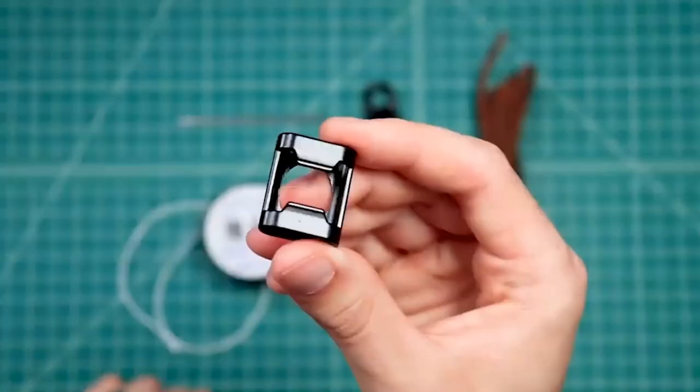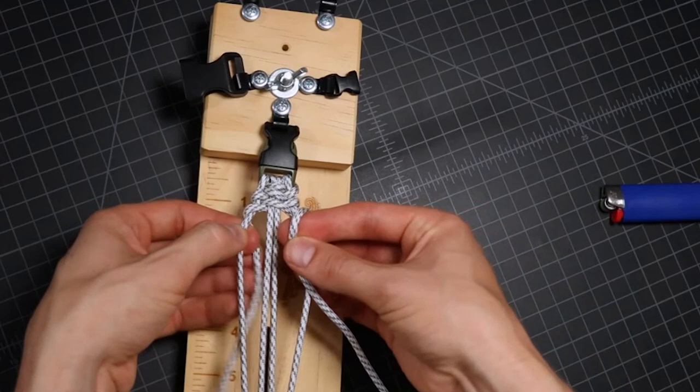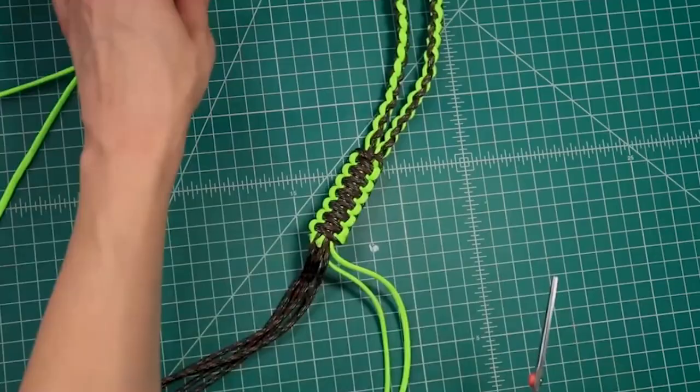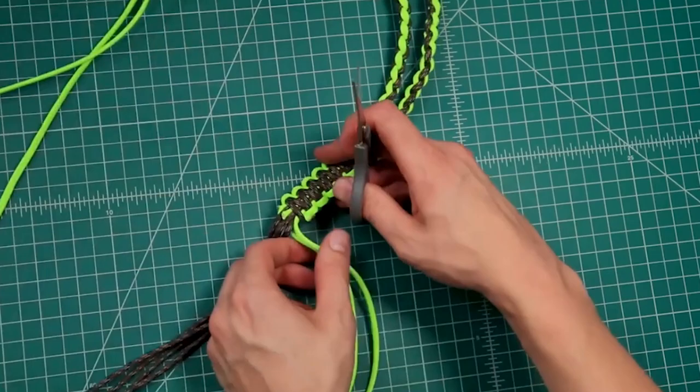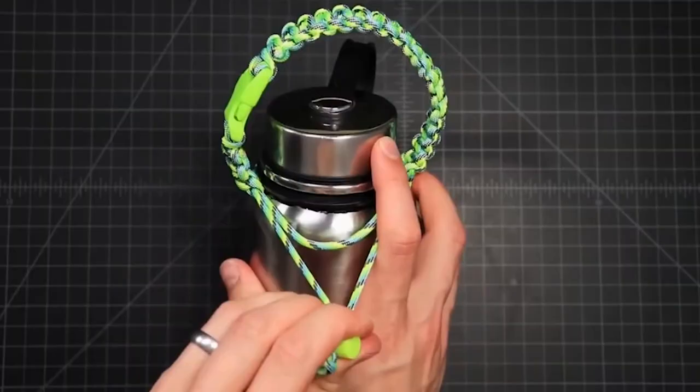We had two bracelet tutorials, one was a football themed bracelet and the other was an easy trilobite, and then two more utility creation tutorials. We had a duck call lanyard video come out as well as a water bottle holder tutorial, so if you're interested in any of those projects, make sure to check out our YouTube channel.